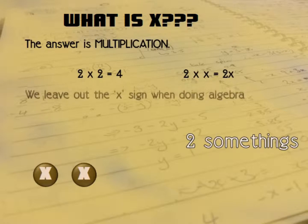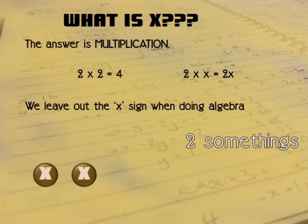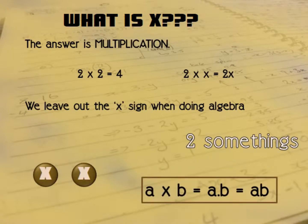You can also see the multiplication sign is quite confusing there. It looks like another X. So we often leave this out when we are working with algebra. And we have different ways to write multiplication. So you've got A times B equals A times B equals A times B. Sometimes we use a dot to represent multiplication. And sometimes we just write the letters AB.